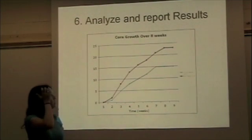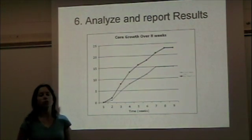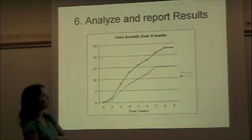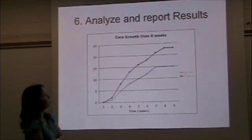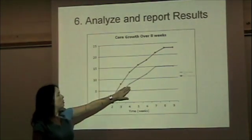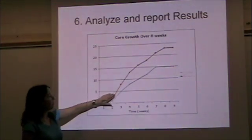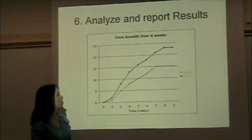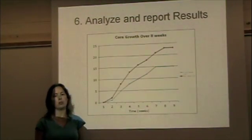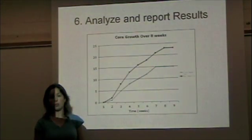Step six is analyzing and reporting your results. Usually you can put your results in a table or in a graph. So I made this graph and this is showing corn growth over eight weeks. You can see the control is the blue line. That would be the normal soil. And then the fertilized corn is with the red line. So we can look at this and easily see that having Miracle Grow in the soil did increase the height of the corn.